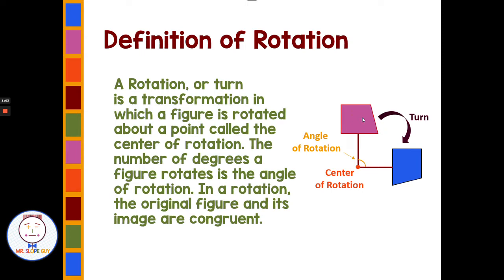In a rotation, the original figure and its image are congruent. If we look at the diagram, we have a center of rotation, the point we're turning it around. We have our original, and then after our turn, we have our image. This is called the angle of rotation. This is an example of a 90-degree rotation clockwise.